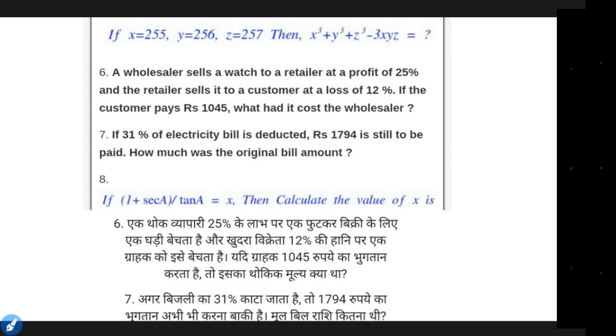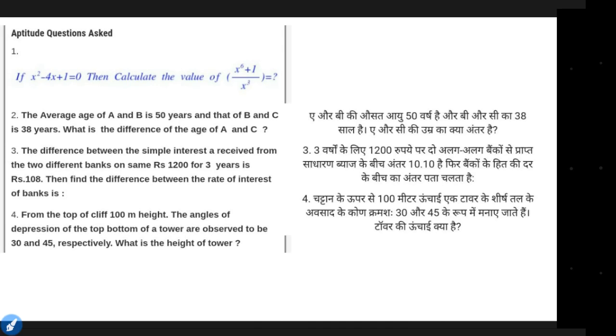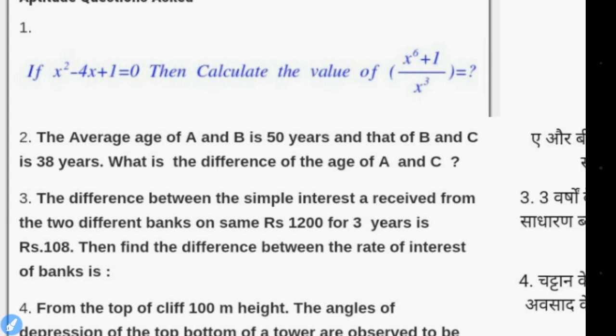If x² plus 4x plus 1 equals 0, then calculate the value of x⁶ plus 1 by x³. You can remove x from the equation and it will be very easy to solve. First get the value of x, then build up to the required expression. It will be easy to find all required values of x.